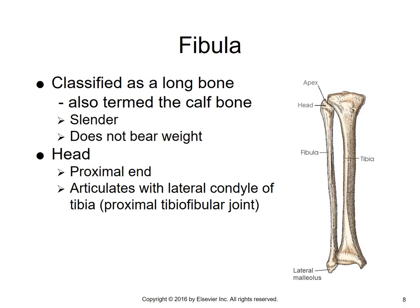Moving on to the fibula: the fibula is also a long bone, referred to as the calf bone. It's a very slender bone and is non-weight bearing. It acts as a splint to the tibia to give the lower leg more support and stability. Proximally, you have what's called the head and then the apex of the fibula. The head is its proximal end, and it is what articulates with the lateral condyle of the tibia to form the proximal tibial fibular joint.